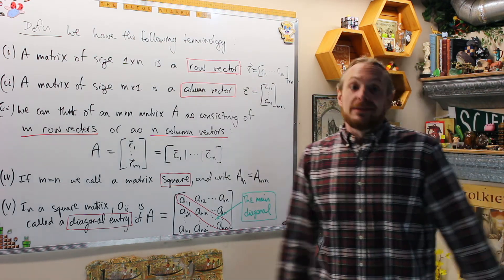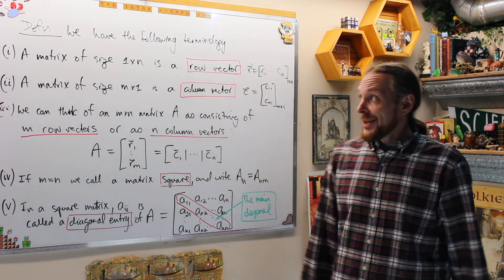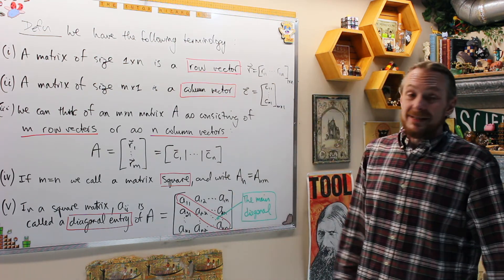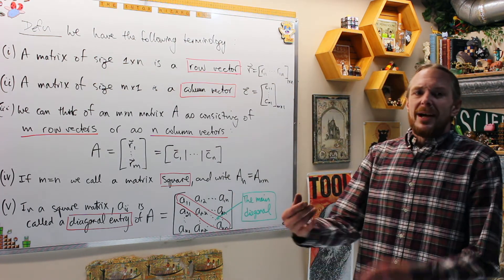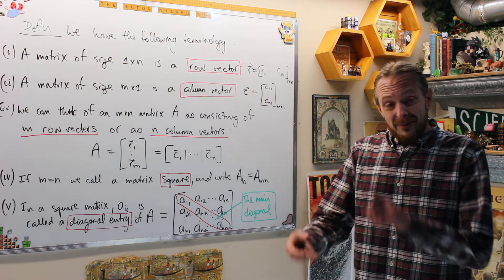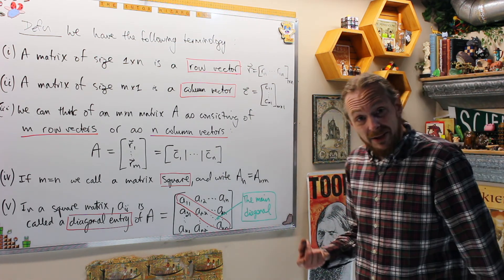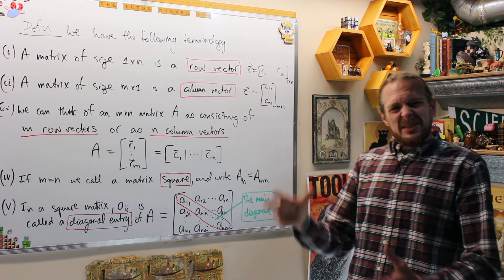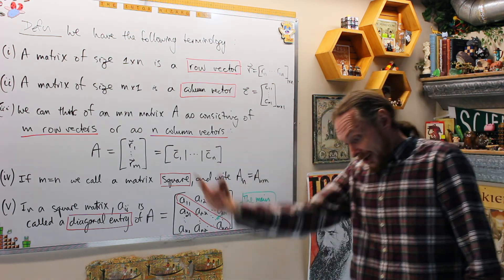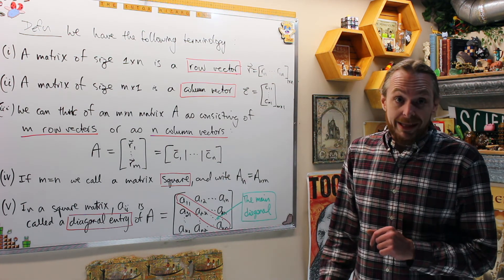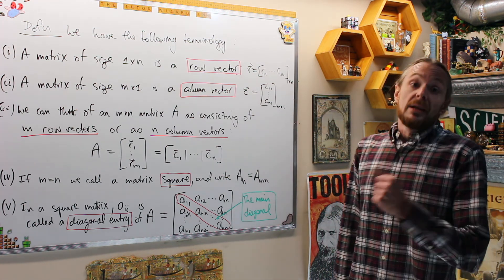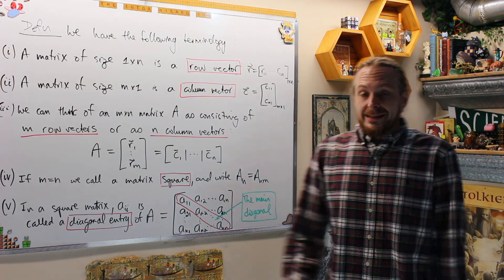That was enough terminology for this lecture. Please subscribe and hit the notification bell. In the next lecture, we're going to define trace, transpose, and the two linear operations — addition of matrices and scalar multiplication of matrices — and then define the vector space structure. After that, we'll define the horrible matrix multiplication and look at solving matrix equations using inverses. See you next time.